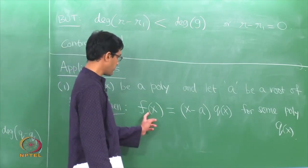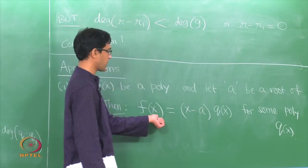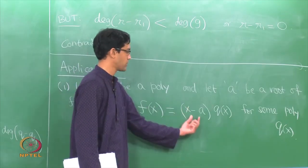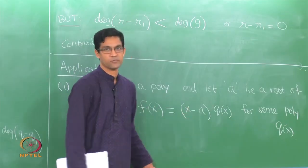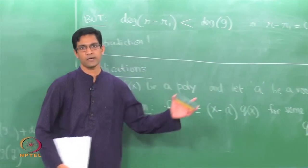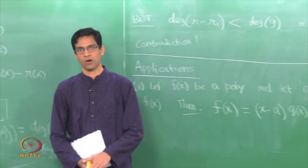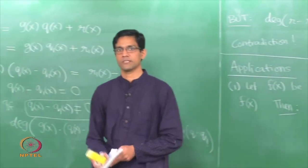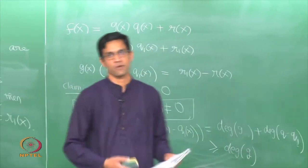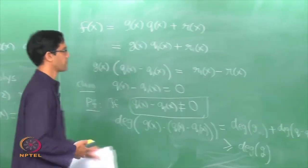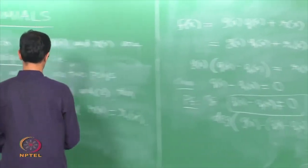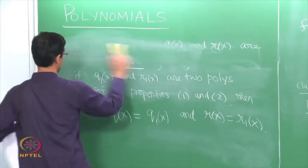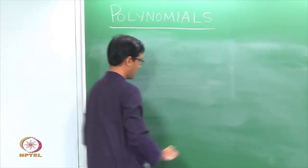Observe that if f has this form, and you substitute x equal to a, you will surely get 0 because there is a term (x − a) in front. The key content here is really the converse: that if f(a) is 0, then f must be a multiple of (x − a). Let us prove it just using the division algorithm.